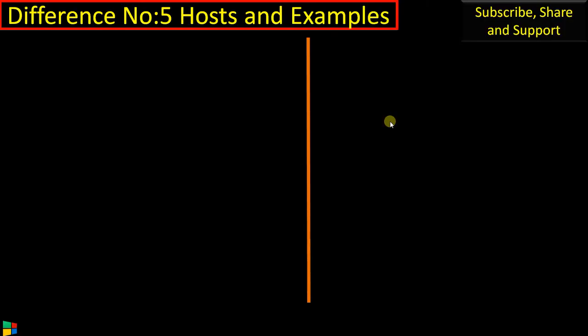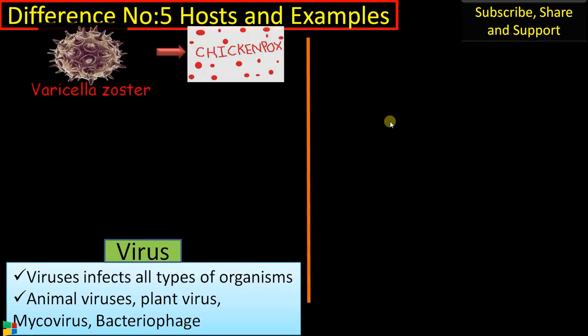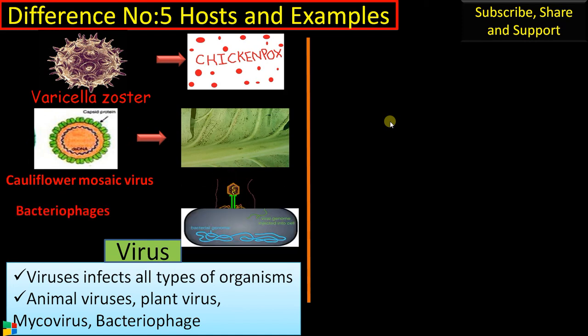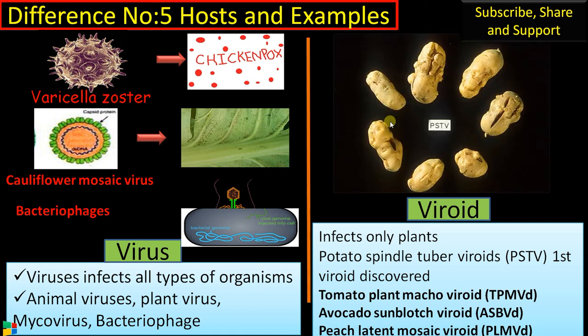Difference number five covers hosts and examples. Viruses infect all types of organisms: varicella zoster causes chicken pox, cauliflower mosaic virus infects plants, viruses that attack bacteria are called bacteriophages, and there are also mycoviruses. Whereas viroids infect only plants. Potato spindle tuber viroid is the first discovered viroid, and this is PSTV-infected potato that is malformed. Other examples include tomato plant macro viroid, avocado sunblotch viroid, and peach latent mosaic viroid.